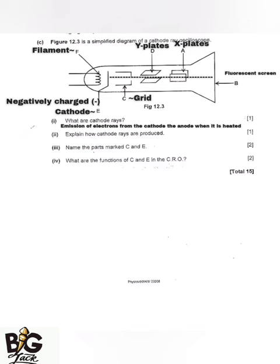The anode is usually positively charged. When the cathode produces electrons, those electrons are attracted to the anode, and the anode accelerates the beam of electrons. So cathode rays are the movement of electrons from the cathode to the anode.